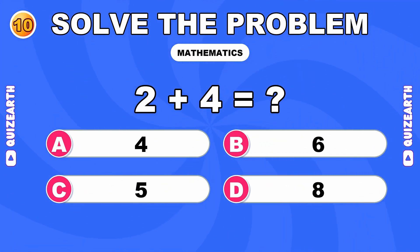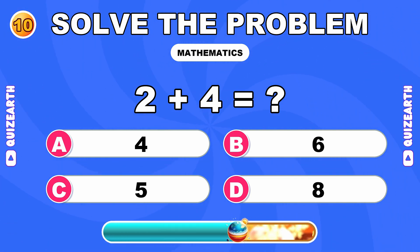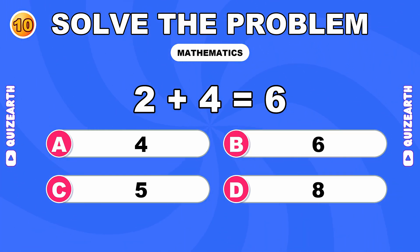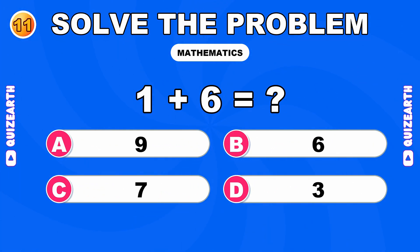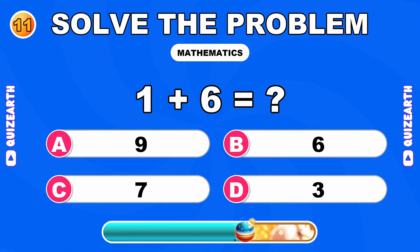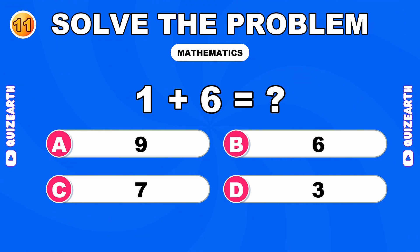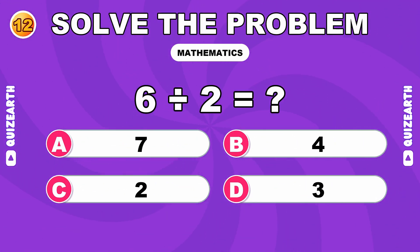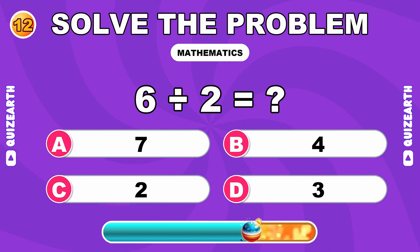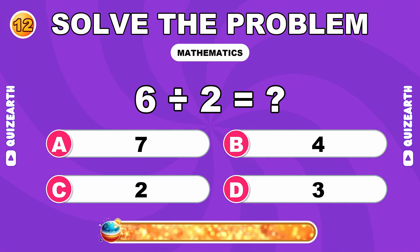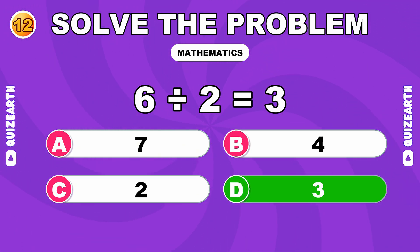What is 2 plus 4? Impressive. The answer is 6. How much is 1 plus 6? You're flying. The answer is 7. What do you get when you divide 6 by 2? Unstoppable. The answer is 3.